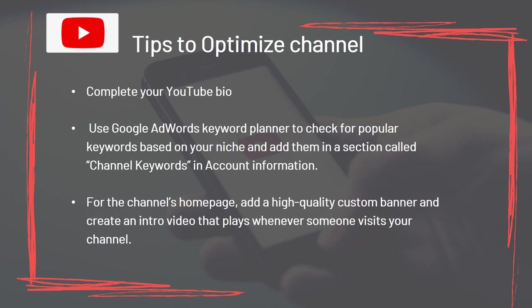Tips to Optimize Your Channel: Complete your YouTube bio. Use Google AdWords Keyword Planner to check for popular keywords based on your niche and add them in the Channel Keywords and Account Information section. For the channel's homepage, add a high-quality custom banner and create an intro video that plays whenever someone visits your channel.